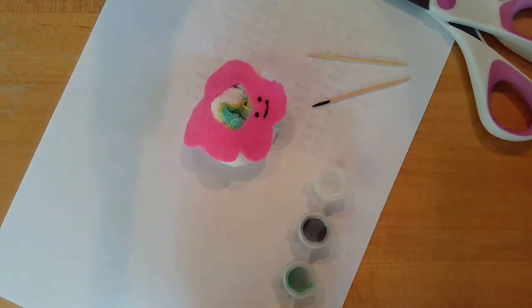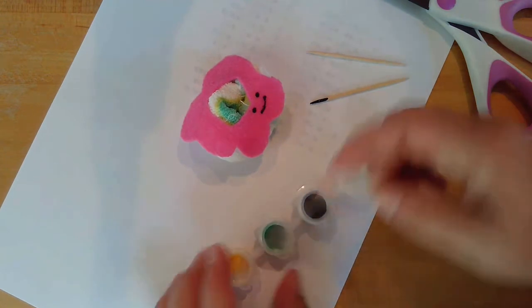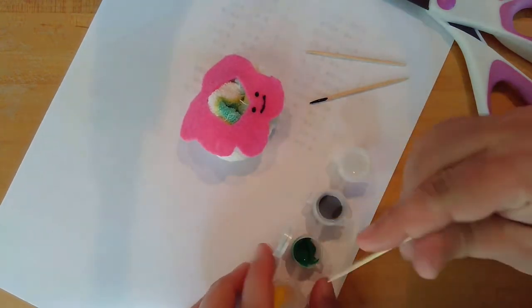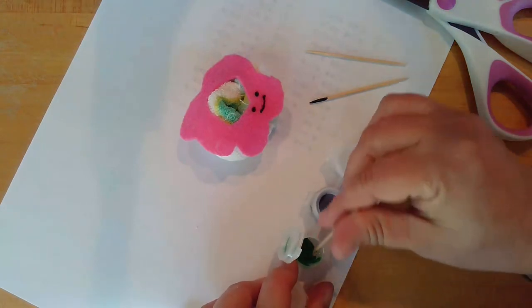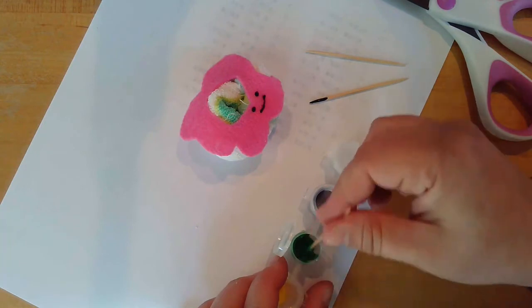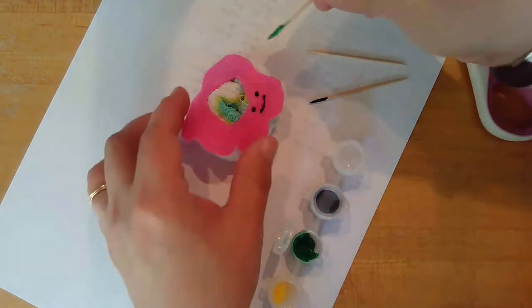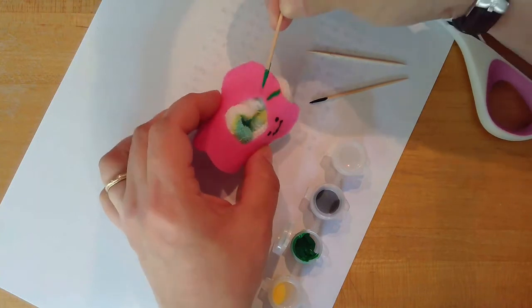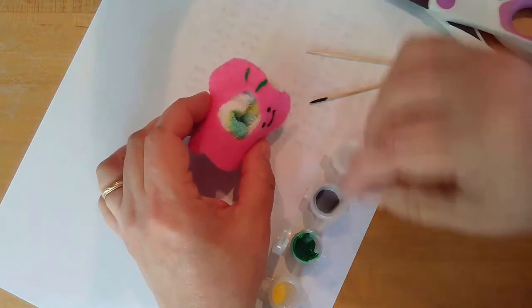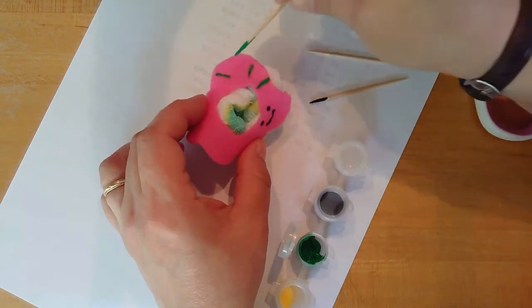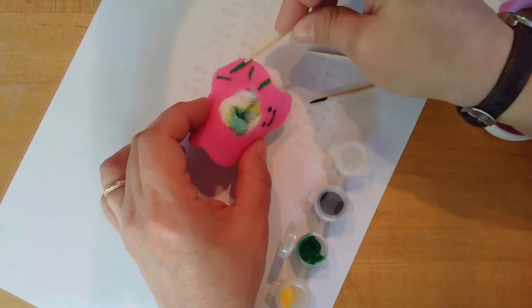Now I'm going to add some sprinkles. I've got two more colors here. I've got green and yellow. And to add the sprinkles, I just get my end of my toothpick covered really well. And then I'm just going to lay it kind of flat against the felt to make a neat little sprinkle shape. Sprinkles are kind of scattered all over the place on a donut. So it doesn't have to be any particular pattern.